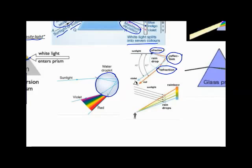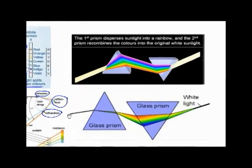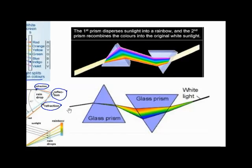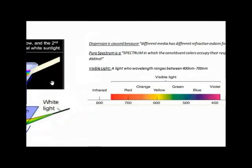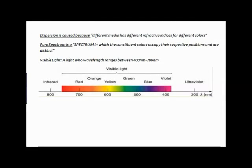Newton went further to test his supposition. He placed two prisms, P1 and P2, with P2 inverted relative to P1. When a narrow beam of composite light was incident on P1, it split into a rainbow spectrum. When the same spectrum was passed through the inverted prism P2, the colors recombined into white light. Dispersion occurs because different media like water and glass have different refractive indices for different colors.